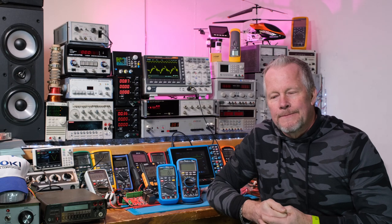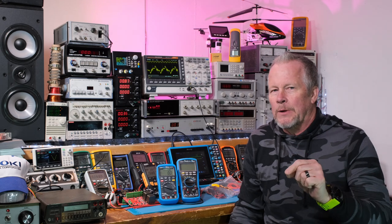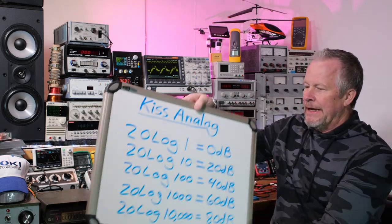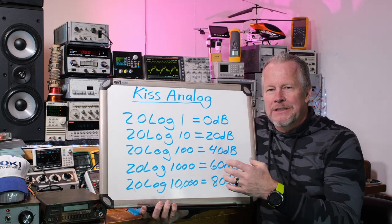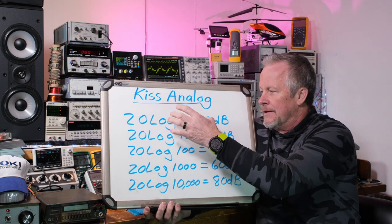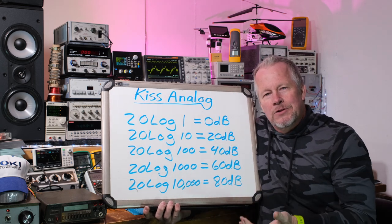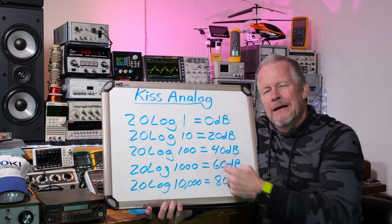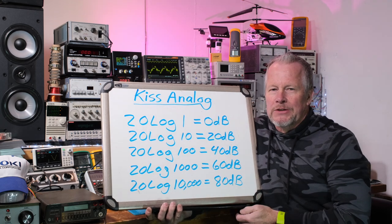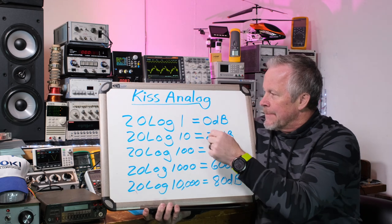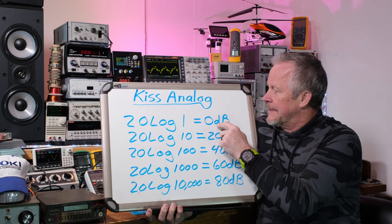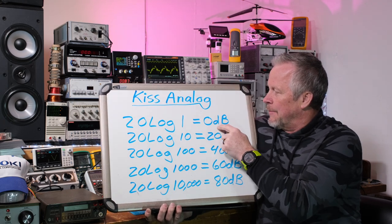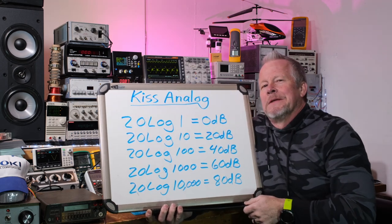Often when we're doing voltage, just knowing that voltage and current use 20 times the log of the voltage or current. When it's power, it's 10 times the log. Usually when we're graphing, we're graphing voltage. So log of 1 was 0, and 20 times 0 is 0 dBs — decibels, named after the guy who got credit for coming up with this, Alexander Graham Bell. So it's deci-bels.